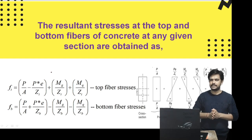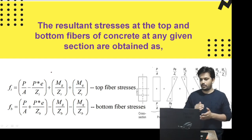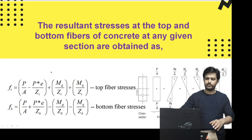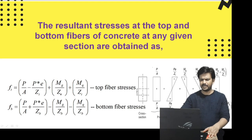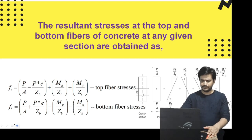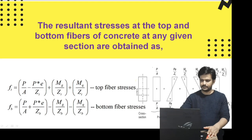So the final stress at the top fiber ft equals P/A minus Pe/Zt plus Mg/Zt plus Mq/Zt, and the stress at the bottom fiber fb equals P/A plus Pe/Zb minus Mg/Zb minus Mq/Zb. Remember these equations — they may seem simple now but are easy to forget later. If you can recall the stress distribution diagram shown on this slide, you won't need to memorize the equations separately.